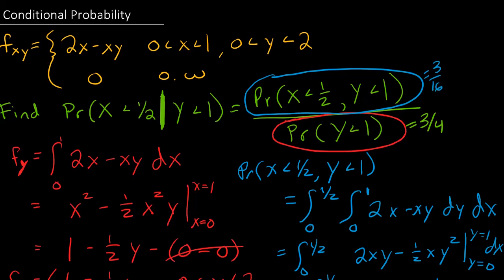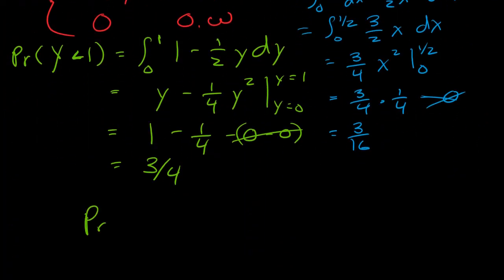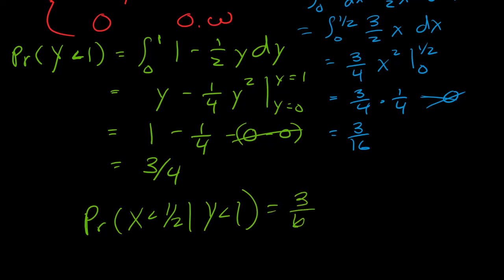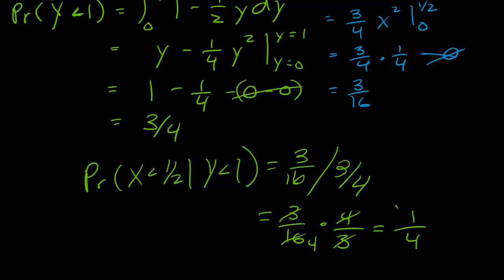So we have a fraction over a fraction. The final answer — the probability that x is less than 1 half given y is less than 1 — is 3 sixteenths divided by 3 fourths. Dividing by a fraction is the same as multiplying by its reciprocal, so multiply by 4 thirds. The 3s cancel, and this reduces to 1 fourth. That's your final answer: 1 fourth.